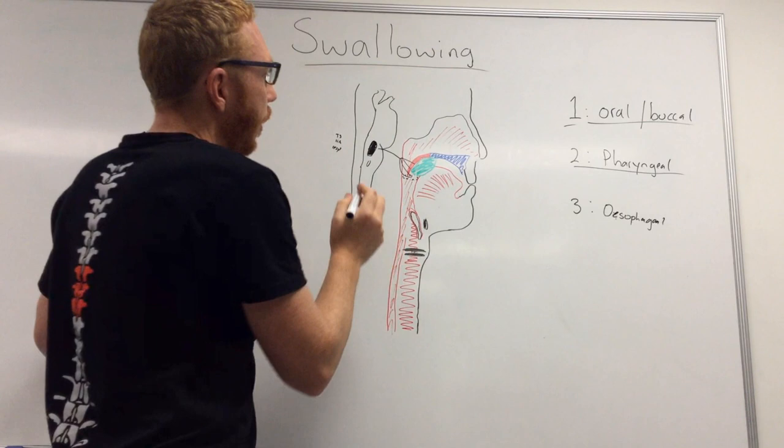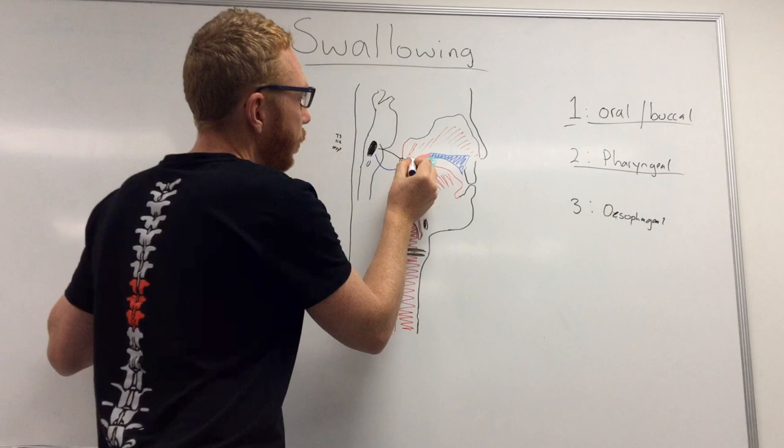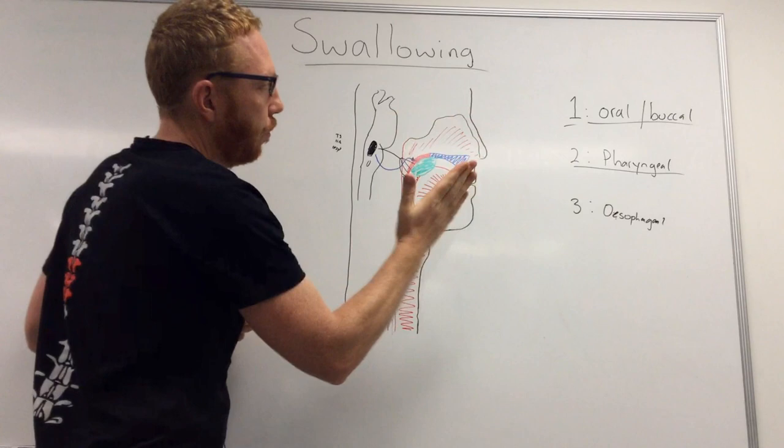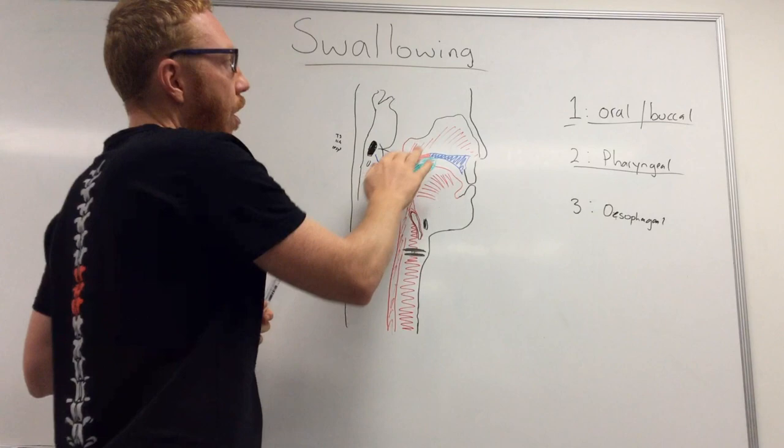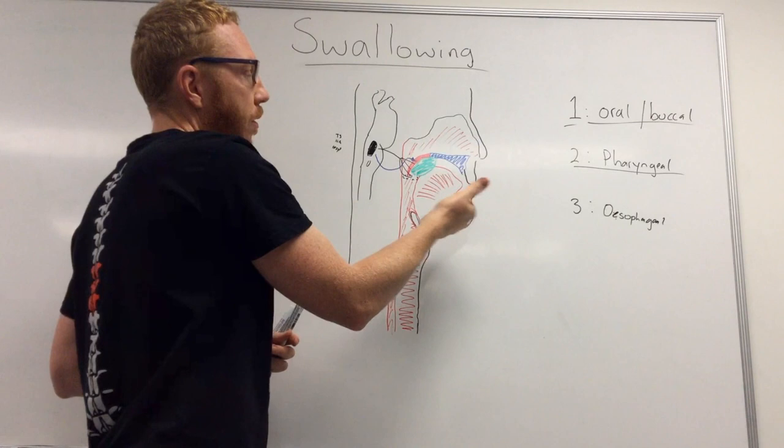These afferent nerves enter the swallowing center and signal that an incoming bolus is present — that is the first of the six sub-phases, the afferent processing. As a result, a motor output goes to the soft palate, causing it to elevate and close off the nasal cavity, preventing any reflux back into the nose. That is the first motor signal activated in the pharyngeal phase.